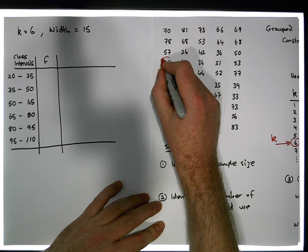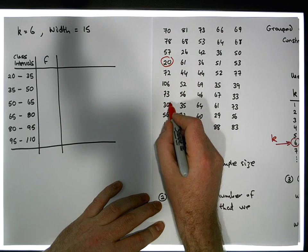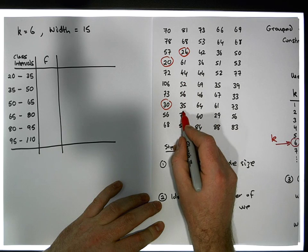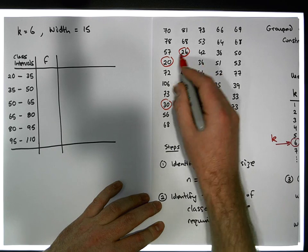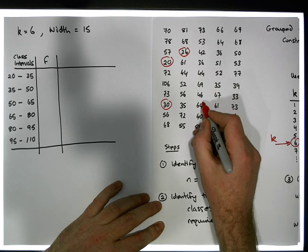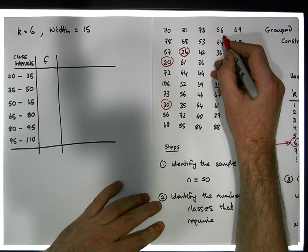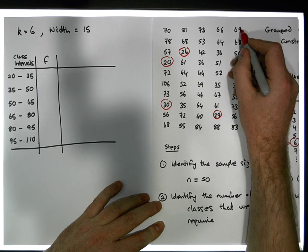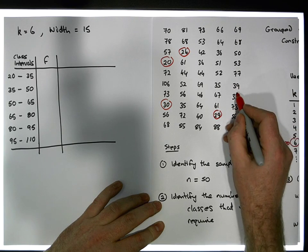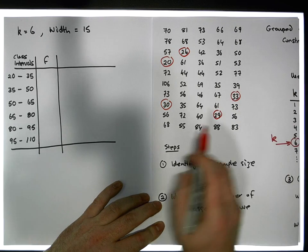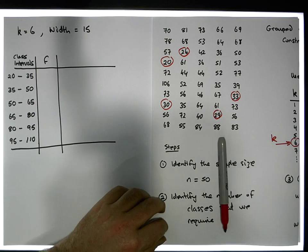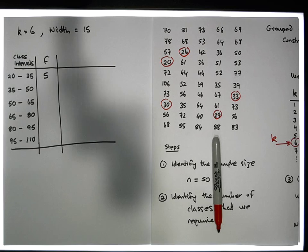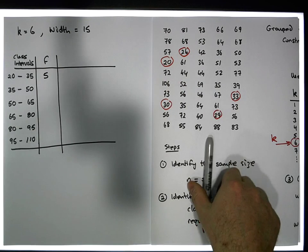Counting through the data: there's one, two, three values. 25 is not less than 45 so still three. Then there's four, five — so there are five values in this first interval. We put a frequency of five in here.